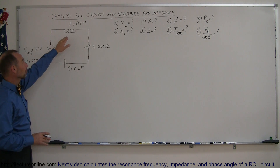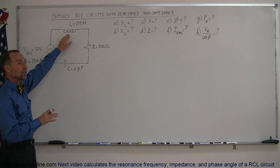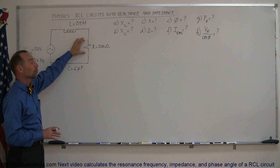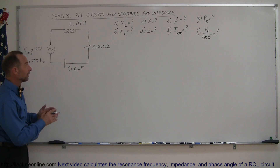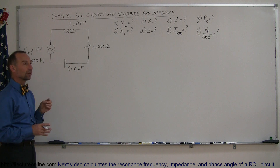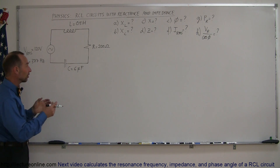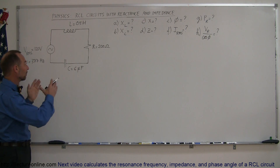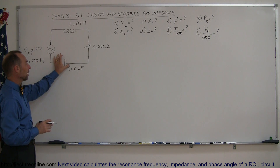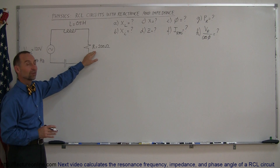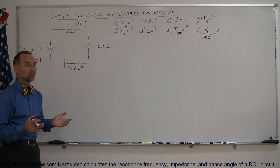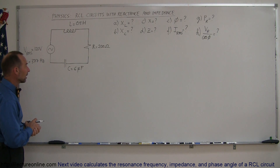Inductors are devices which oppose a current change, which means that the voltage drop across the inductor happens before the voltage drop across the resistor — they're out of phase by 90 degrees. The capacitor first fills up with charge, and then the voltage difference builds up as charge builds up across it, so the voltage across the capacitor lags the voltage across the resistor by 90 degrees.